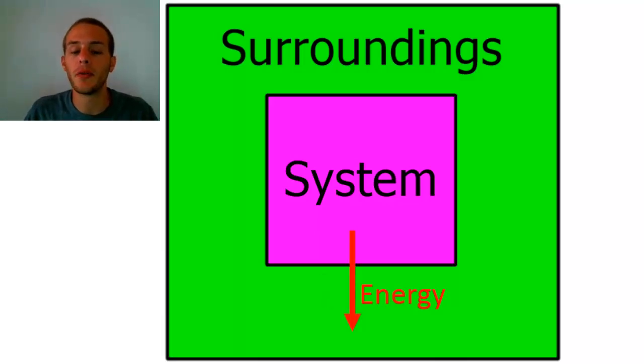Conversely, if you go in the other direction, so in other words if energy is flowing out of the system into the surroundings, so the system is losing energy and the surroundings are gaining energy, well this is considered a negative change.